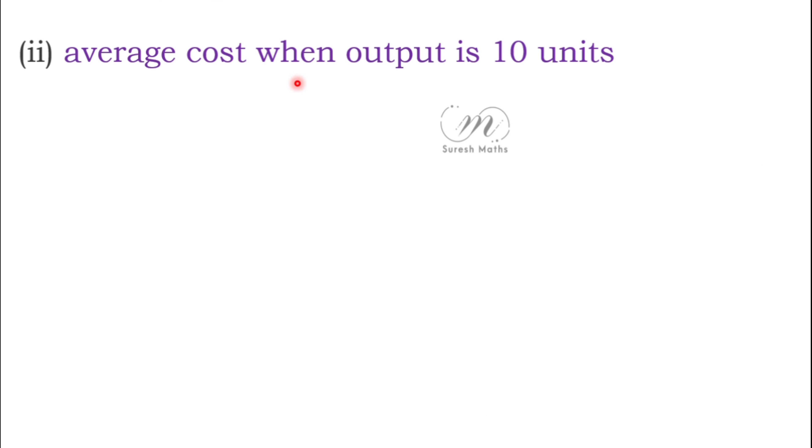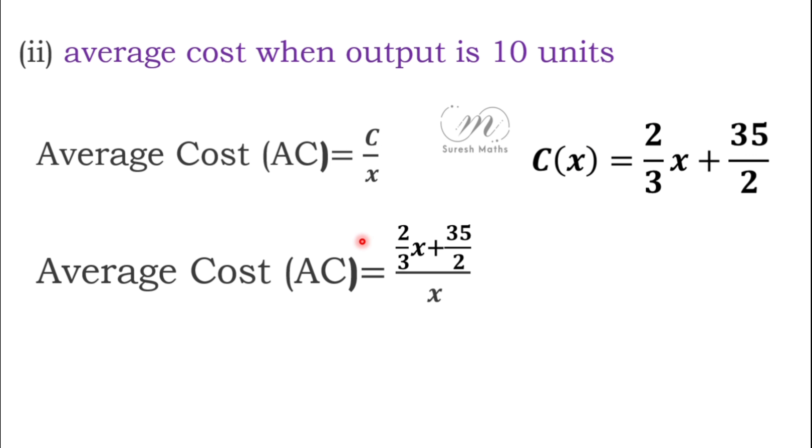Next, average cost when x equals 10. Average cost formula is C/x. The function divided by x: (2/3x + 35/2) / x. Divide each term by x: 2/3x by x gives 2/3, plus 35 by 2x.